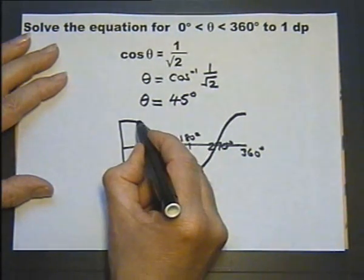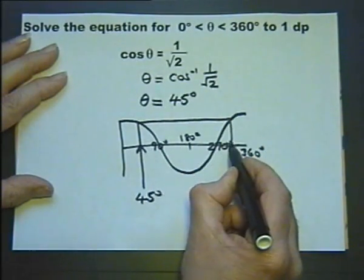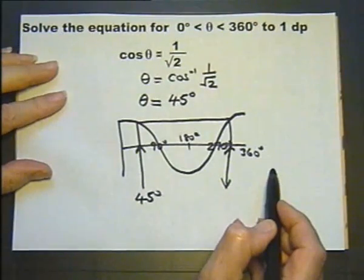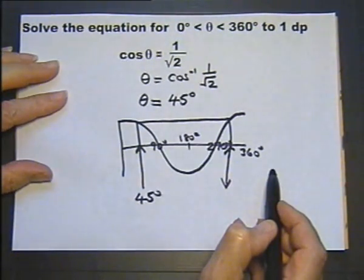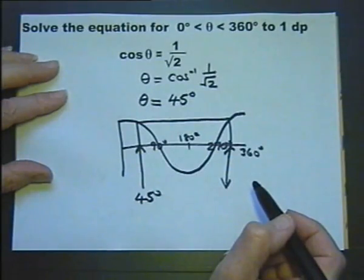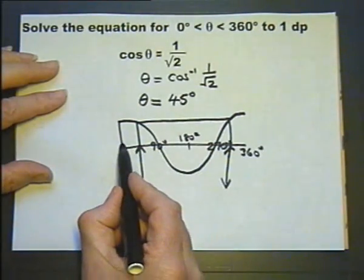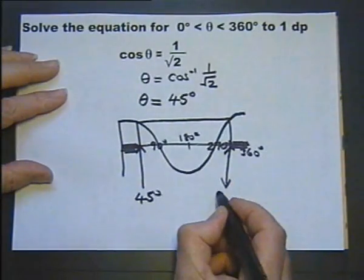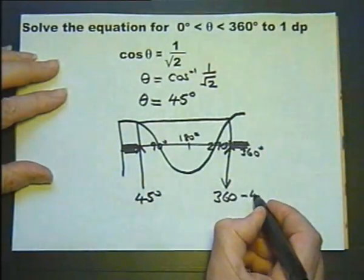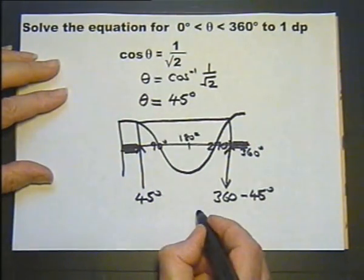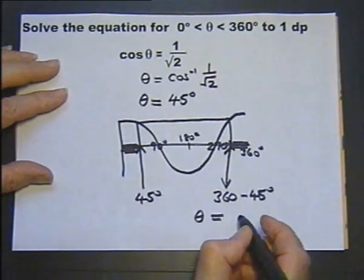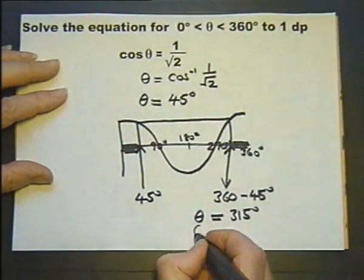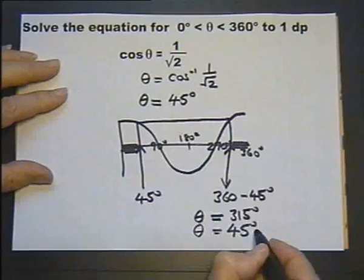Here, therefore the angle here will have exactly the same cosine value of one over root of two. Again, looking at the symmetry of the graph, this is 45 degrees, so this is 45 degrees back from 360. So if you work that out, we get that theta is an angle of 315 degrees, and of course we've got theta from the calculator of 45 degrees.